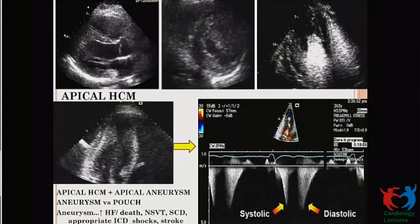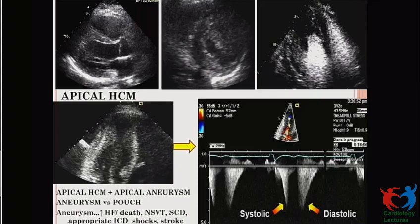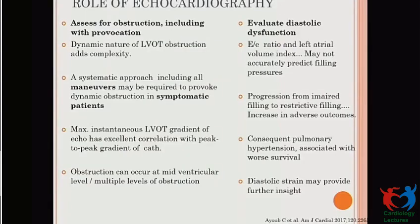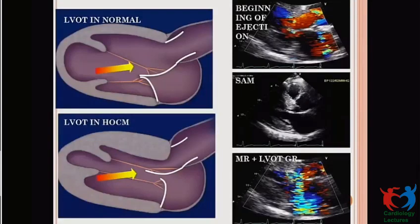In apical HCM, the basal septum is quite thin but becomes thicker toward the apex. In the short axis view the LV lumen is almost obliterated, and contrast imaging helps with clear delineation of the endocardial border. Apical HCM with an aneurysm is associated with higher chances of heart failure, death, NSVT, appropriate ICD shocks, and cardioembolic stroke.